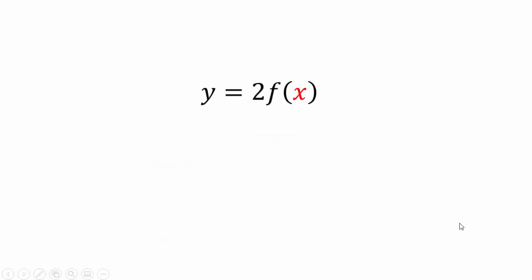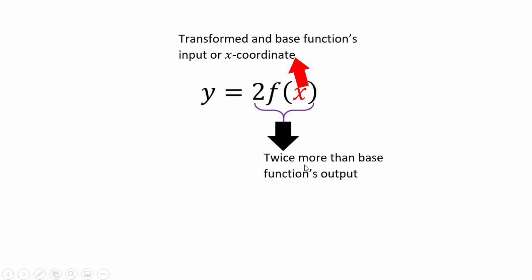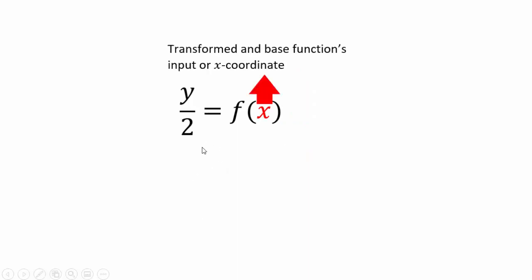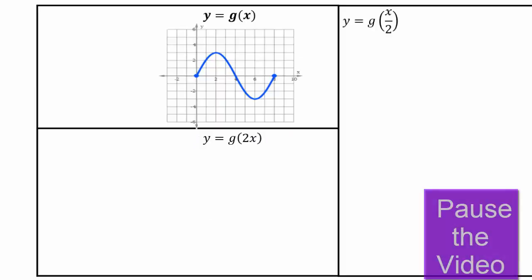In general for y equals 2 times f(x): x is the original and transformed function's input coordinate. Two times f gives 2 times the base function's output. And y is the transformed function's output. Equivalently written as y over 2 equals f(x) — f is the base function's output, x is both functions' input since we're not changing x, and y divided by 2 is half the transformed function's output.